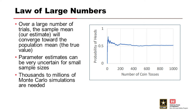Law of Large Numbers: over a large number of trials, the sample mean — our estimate — will converge toward the population mean, the true value. Parameter estimates can be very uncertain for small sample sizes, which is why thousands to millions of Monte Carlo simulations are needed.